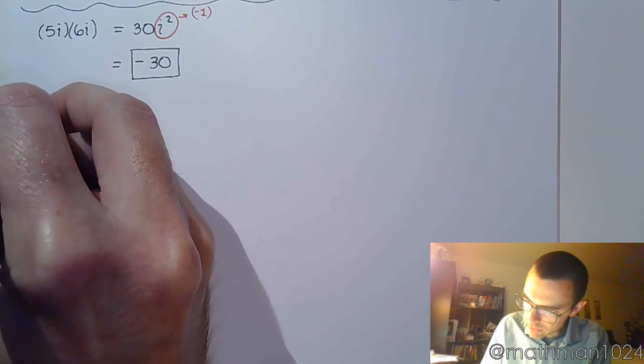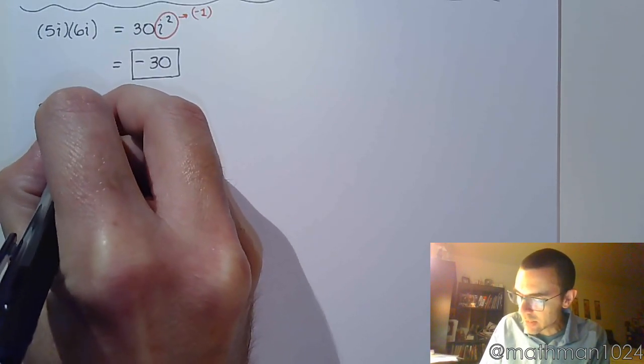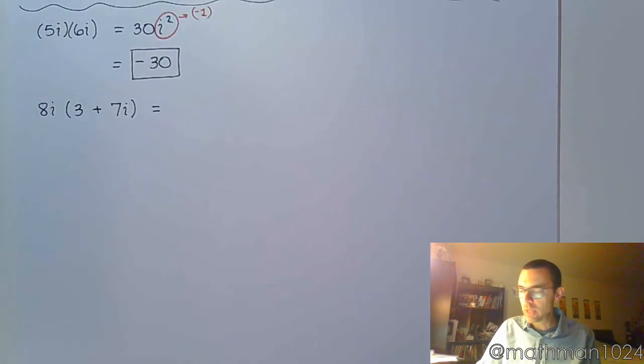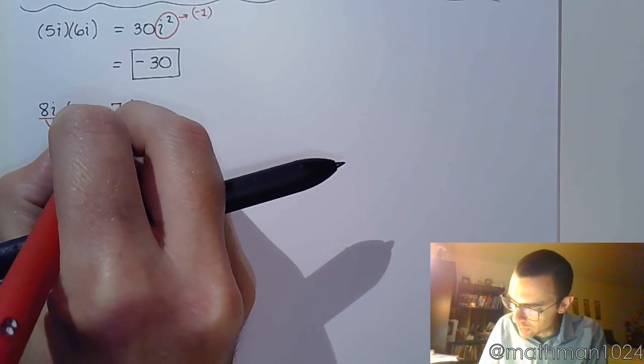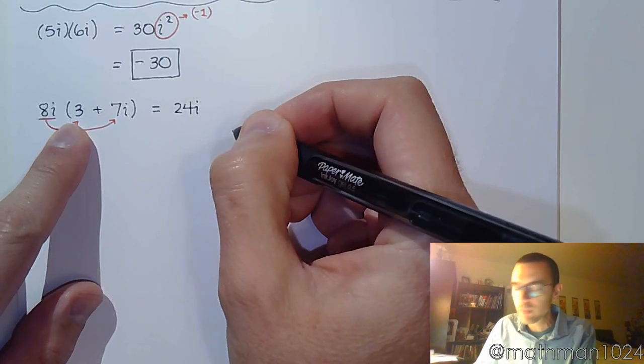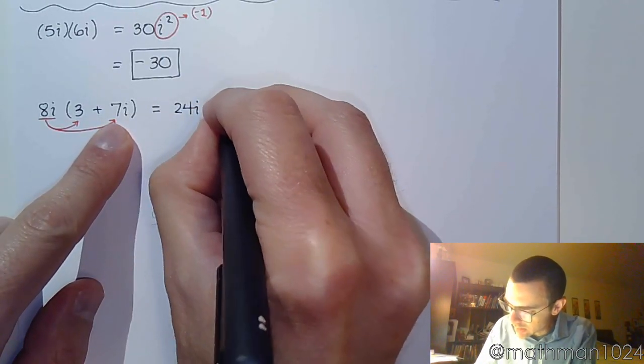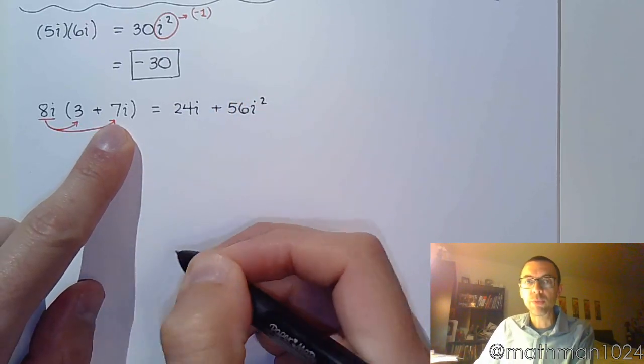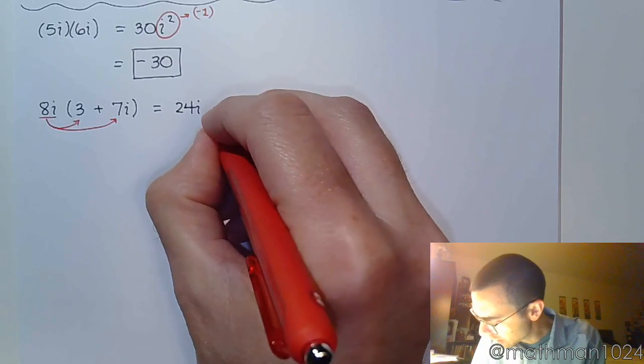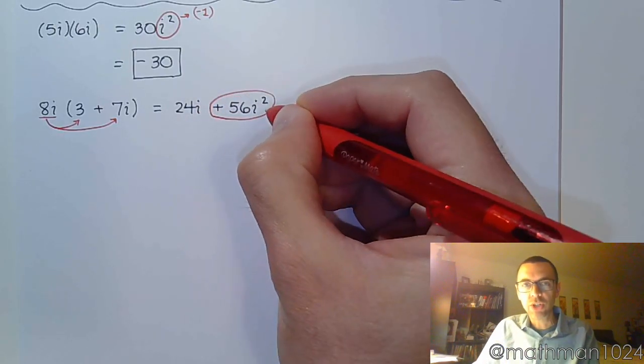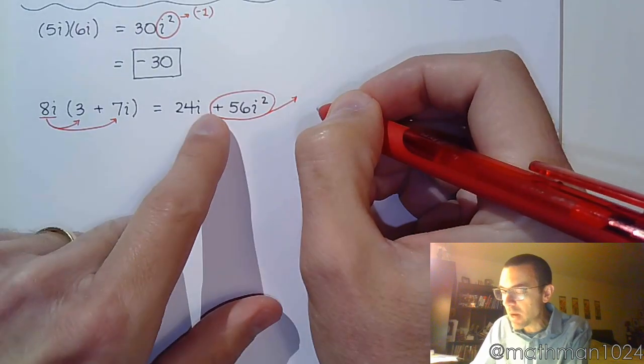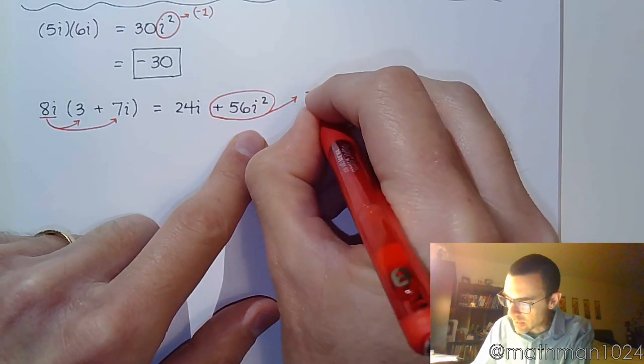Let's make things a little bit more interesting. 8i times 3 plus 7i. Looks like a normal distributing problem. You're going to take the 8i and distribute. So 8i times 3 is 24i. 8i times 7i is 56. Don't forget that you're multiplying i times i, so you get i squared. And like we were mentioning just a moment ago, this i squared is going to change the sign. Now, here's what I tend to do. I tend to circle that entire term and just kind of arrow off over here to say that this positive 56i squared becomes negative 56.